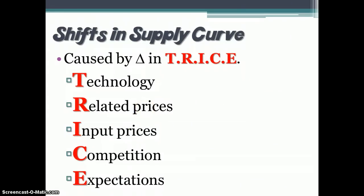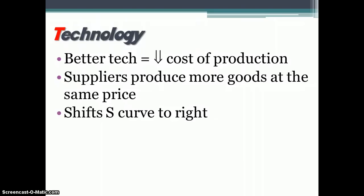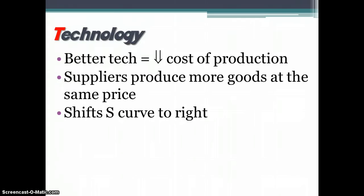The supply curve will shift for any reason related to these five things, and we have a mnemonic for it: TRICE. The causes of supply shifts are technology, the price of related goods, input prices, competition, or expectations. When we look at technology, if there is better technology, that would reduce the cost of production, which means that as a supplier you would be willing to produce more goods at the same price, which would cause your supply curve to shift to the right.